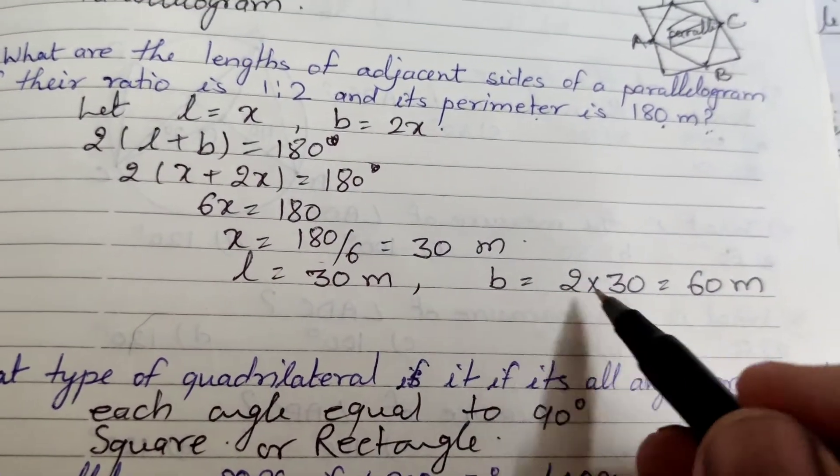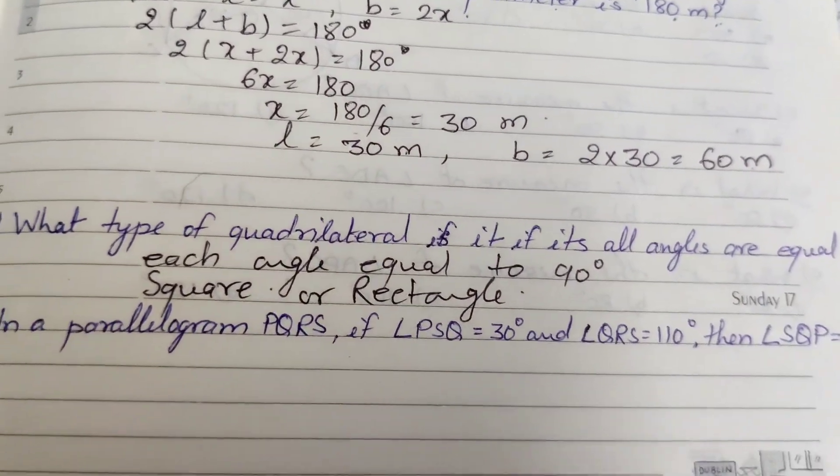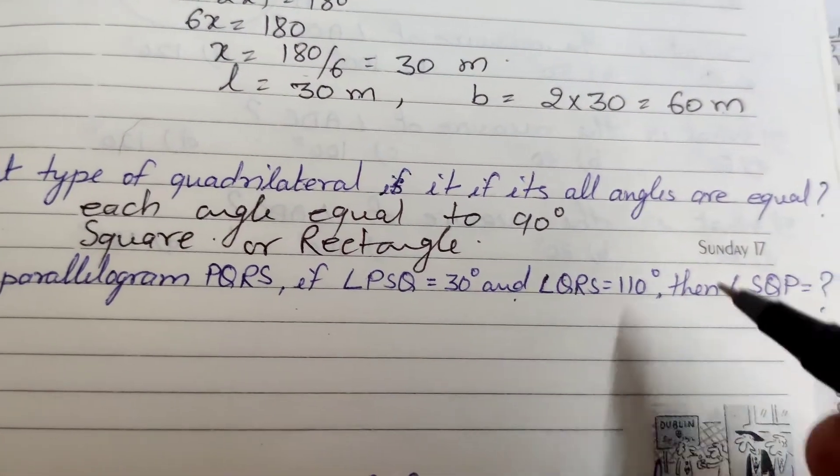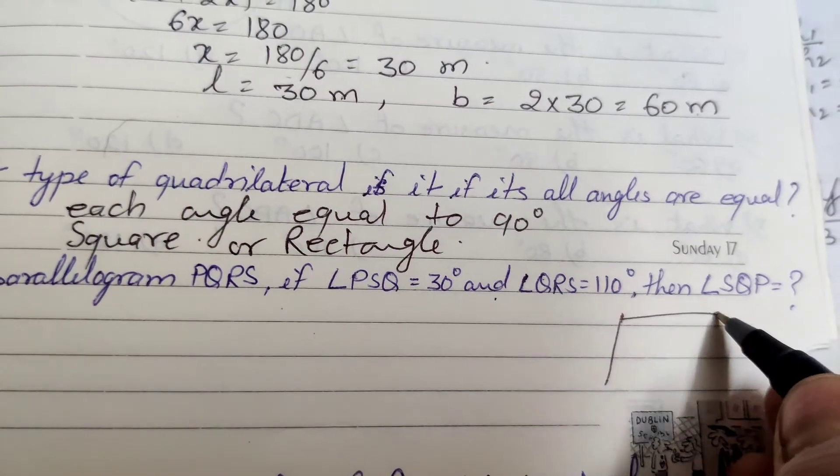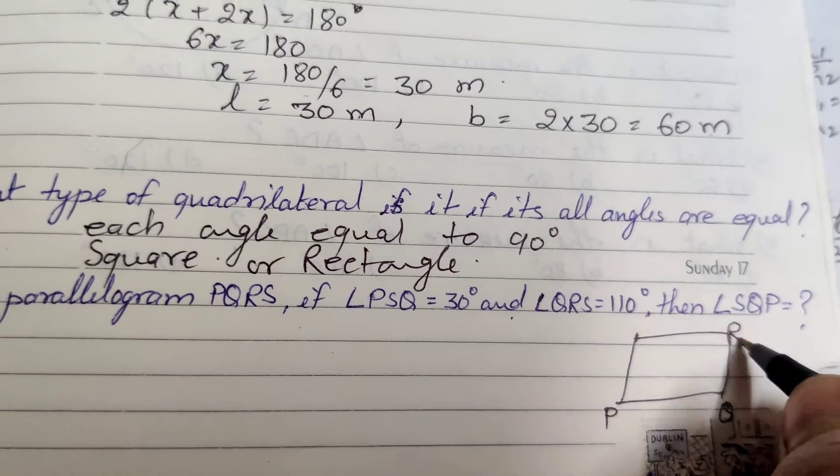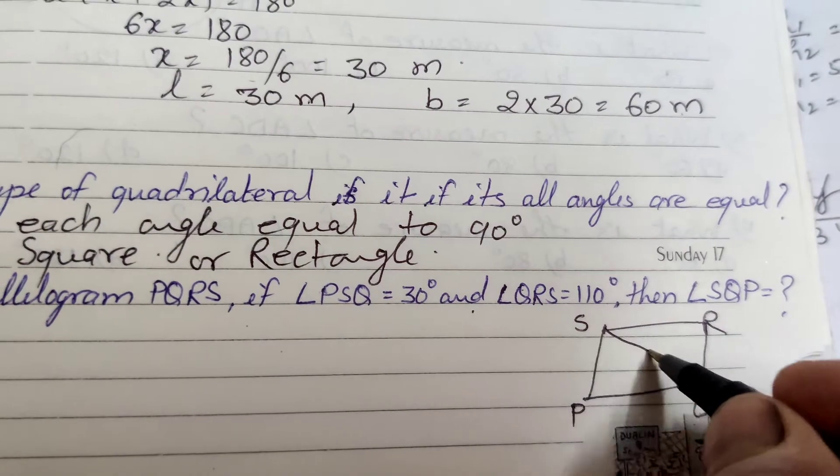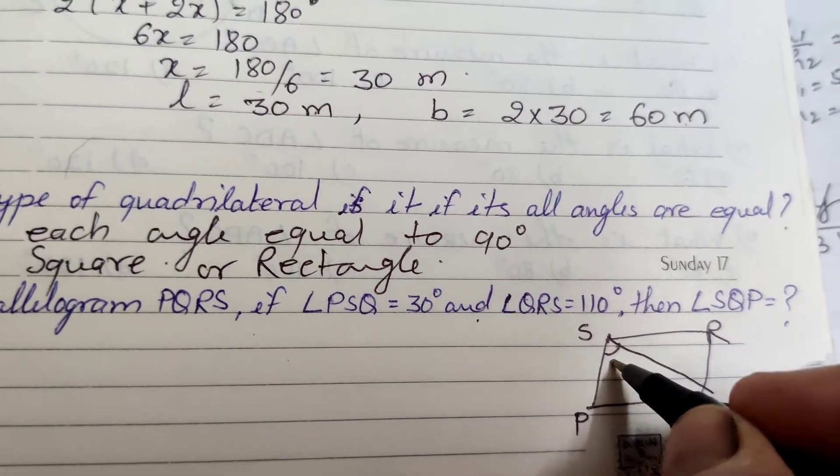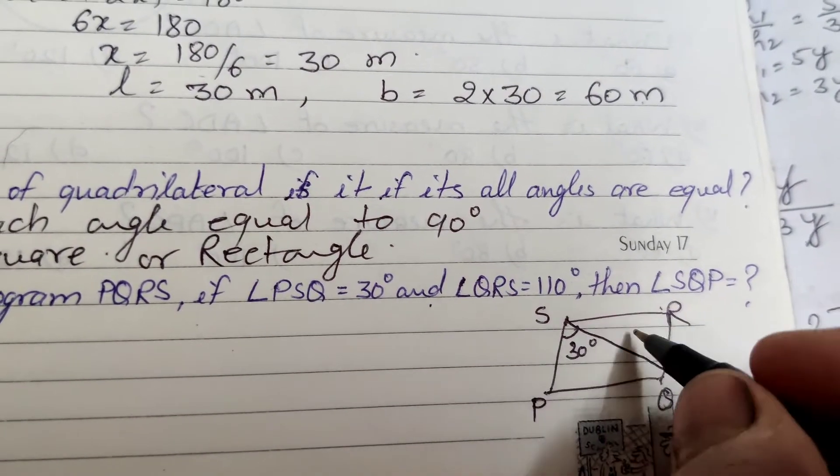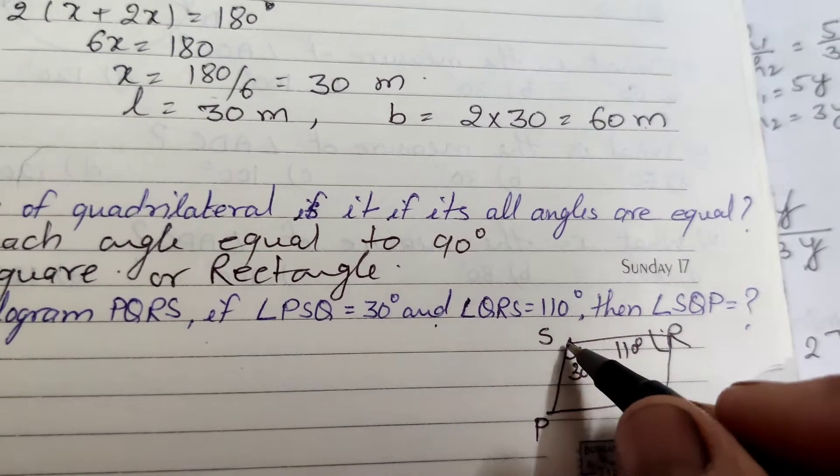Next: In parallelogram PQRS, angle PSQ is 30 degrees and angle QRS is 110 degrees. Here in PQRS, angle PSQ equals 30 degrees, and QRS is 110 degrees. Find angle SQP.